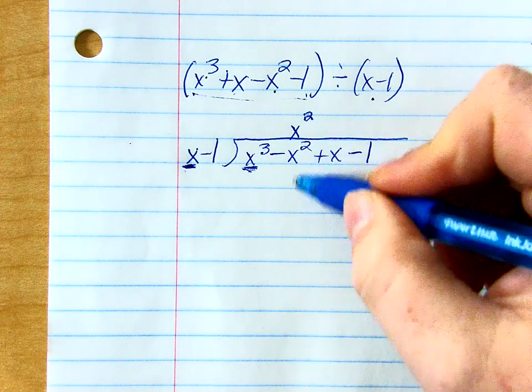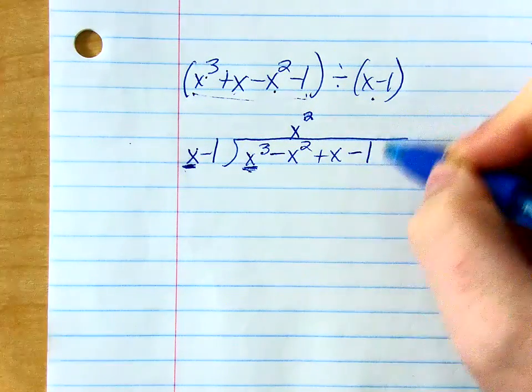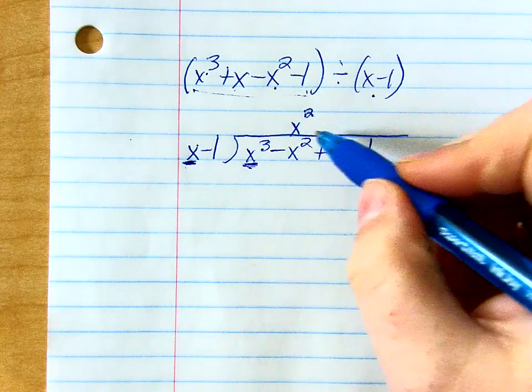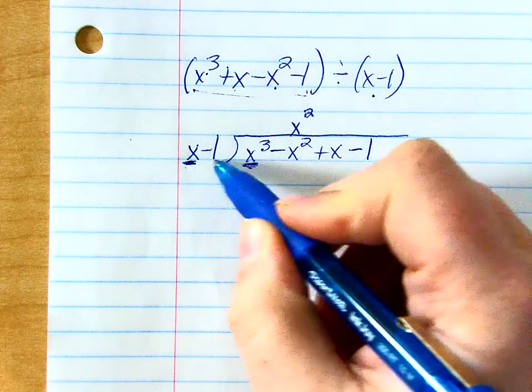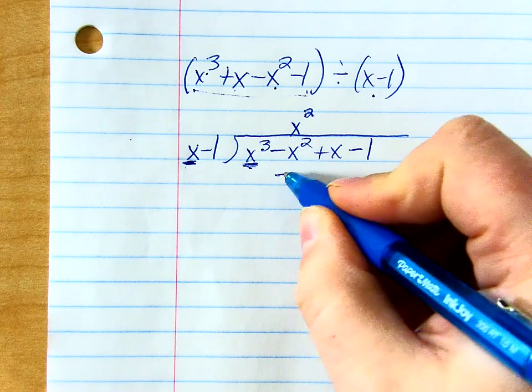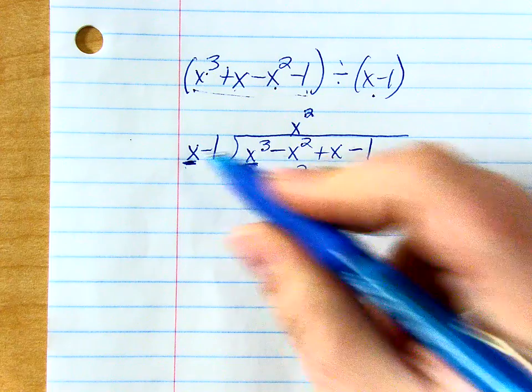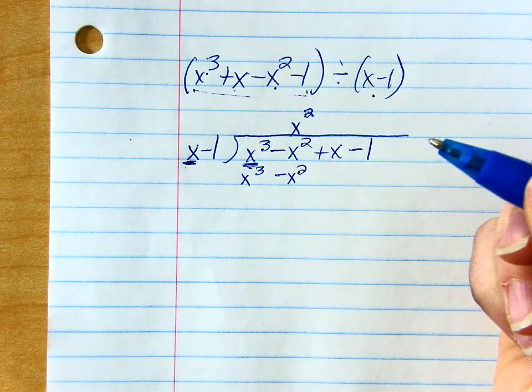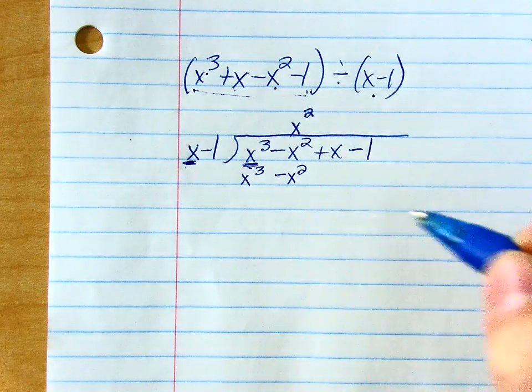So that goes on top in the x squared column. Well, I want all of my x squareds here, all of my x's here, all the single numbers here. That's going to help me keep everything organized. So now we'll do x squared times this binomial. x squared times negative 1 is negative x squared, and then x squared times x is x to the third, right?